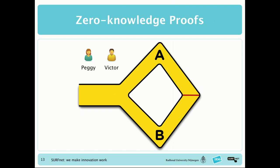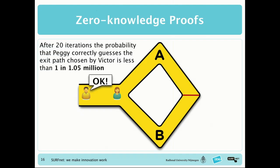They play this game a number of times. Peggy goes in again, randomly picks path A, Victor enters and calls out A — she doesn't have to open the door, but Victor doesn't know that. After about 20 iterations, the chance she can fool Victor drops to about one in a million. In the IRMA implementation, we don't do 20 iterations — we do 2 to the power of 80, using clever tricks so it doesn't take forever. This lets us strongly prove that the prover knows something without revealing the secret to the verifier.